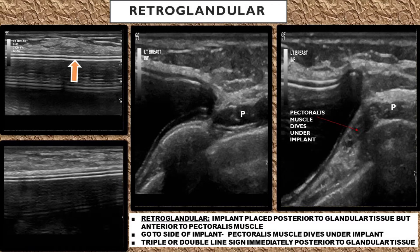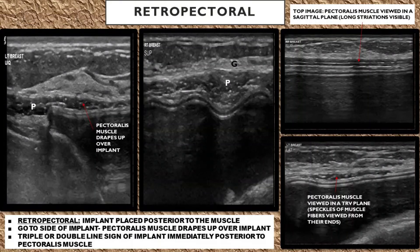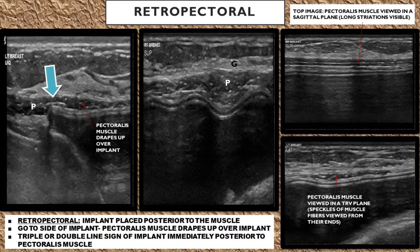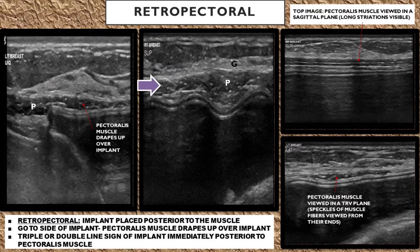Here are some ultrasound images of a retropectoral implant placement. This is where the implant is placed below the pectoralis muscle. You'll note that the pectoralis muscle drapes up over the top of the implant, so you're going to be able to visualize your glandular tissue layer, then your pectoralis muscle striated layer, and then your triple or double line sign of the fibrous capsule and the implant shell wall.